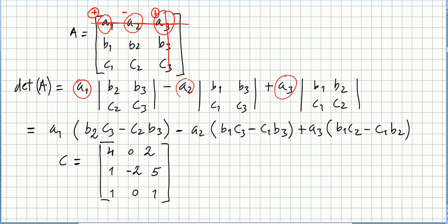Let us see an example. So we have matrix C. 4, 0, 2, 1, minus 2, 5, 1, 0, 1.